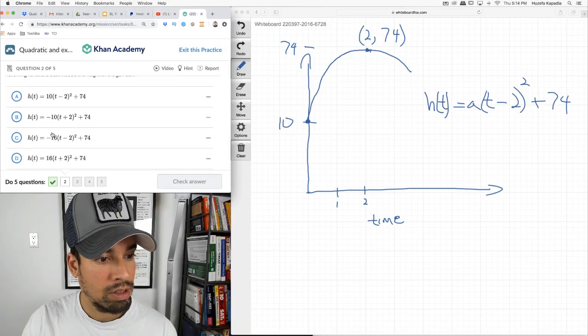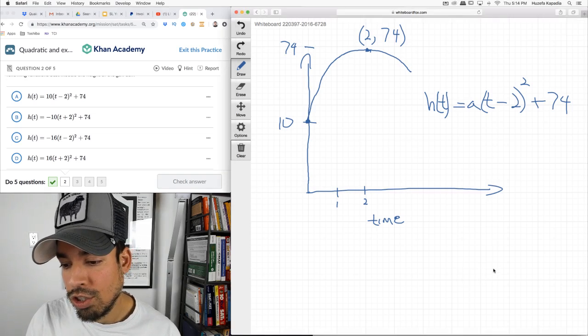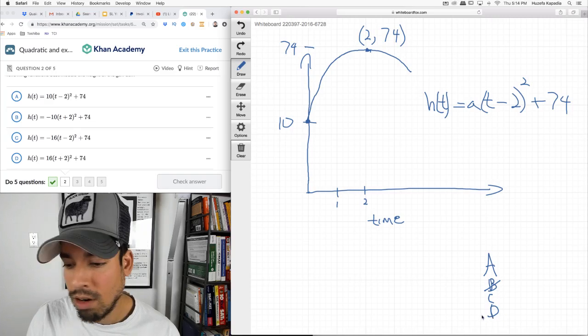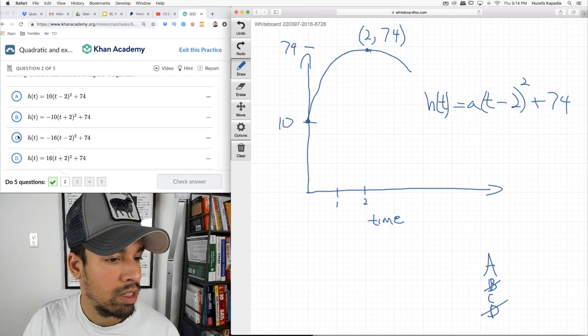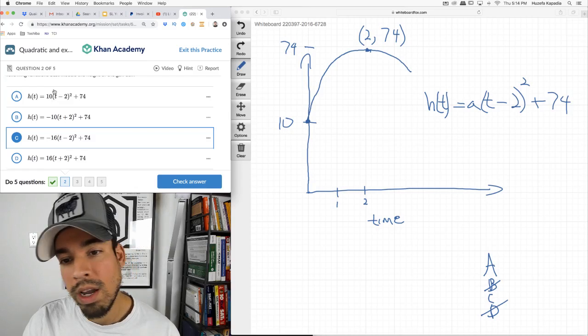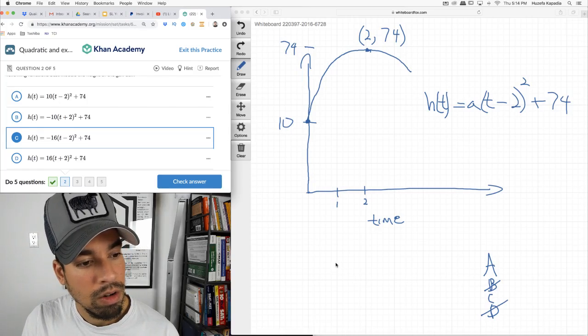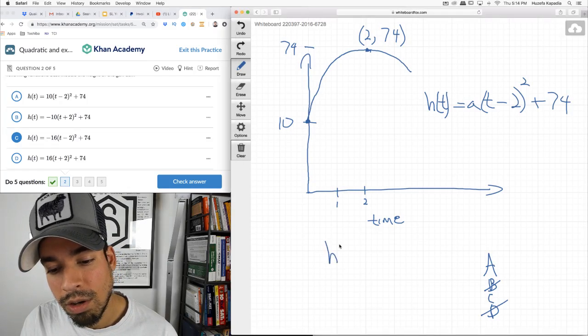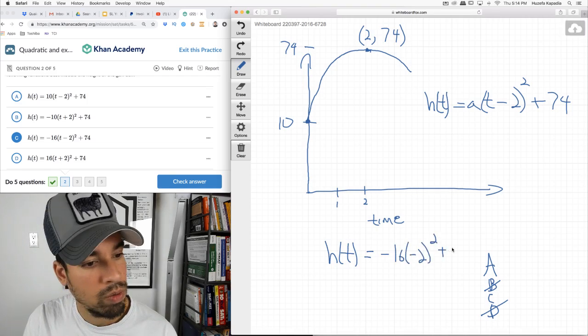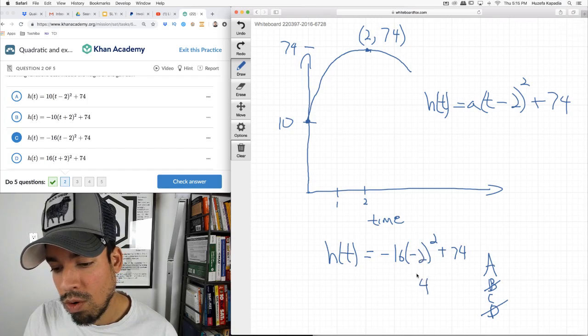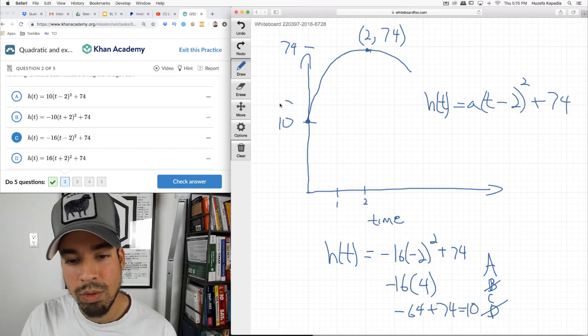So B and D are out, because it's supposed to be minus 2. This would indicate at negative 2 seconds, it would be a height of 74. So B and D are out. Already, if you're running low on time, you have a 50-50 chance between choosing A or C. I already know it's C, because this value is negative, this is positive. If I plug in 0 for T, negative 2 squared is 4, and then 4 times negative 16 is negative 64 plus 74 equals 10. And that's what we wanted, our initial height of 10.